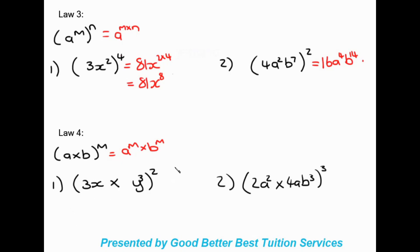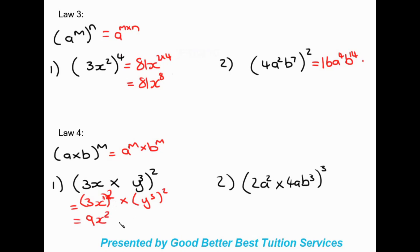For the example three x times y to the power of three, all squared, I'll show two methods that both give the same answer. First method: following the law, we have three x squared in brackets times y to the power of three squared. Working it out: three squared gives nine, x has an invisible one so one times two gives x squared, and y to the power of three times two gives y to the six. That gives us nine x squared y to the six.